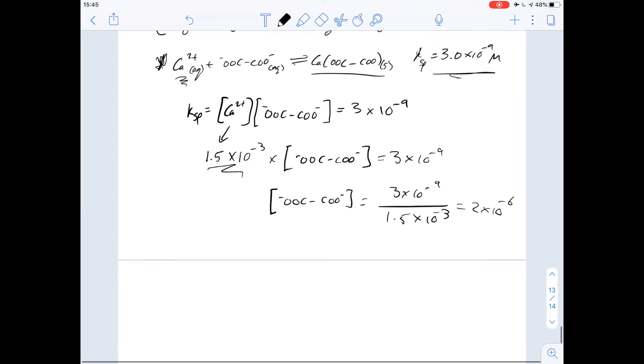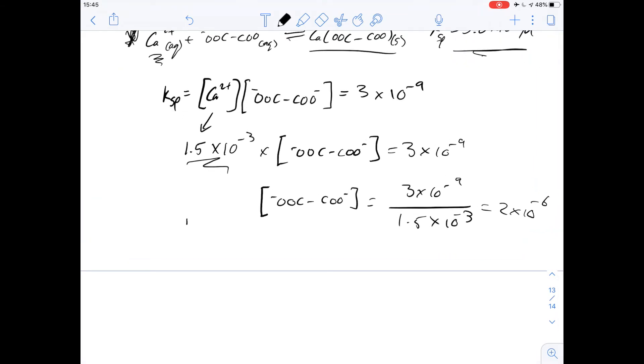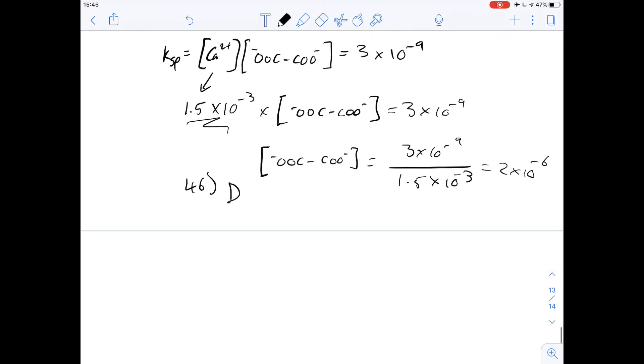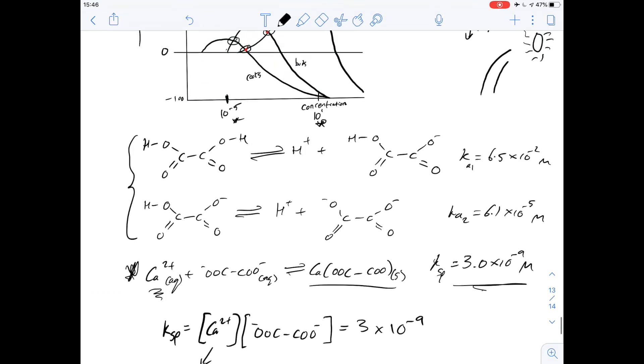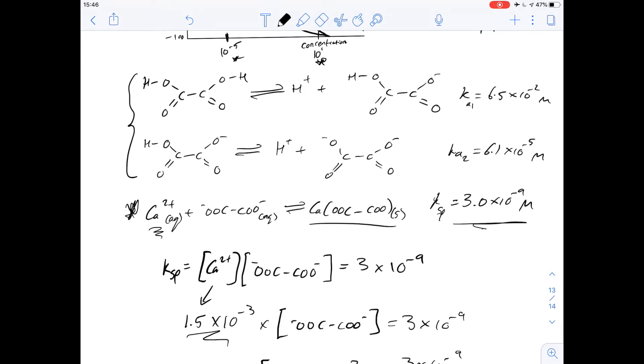And that answer is therefore going to be for number 46 is going to be D. Question 47 asks drinking strong antacids to relieve indigestion produces kidney fluid that's more alkaline than usual, are kidney stones more likely to occur under these conditions?